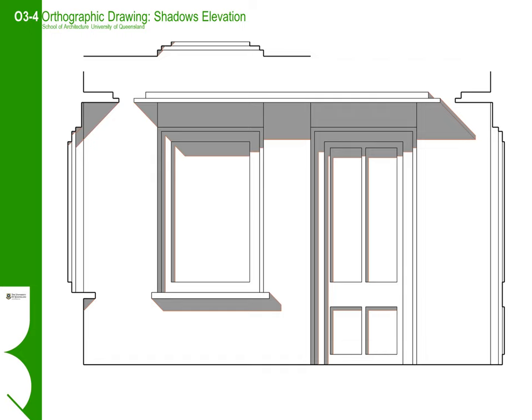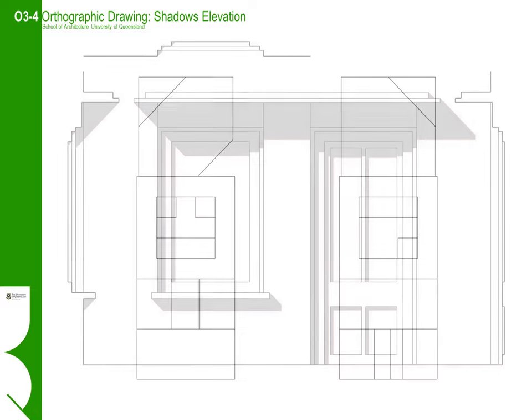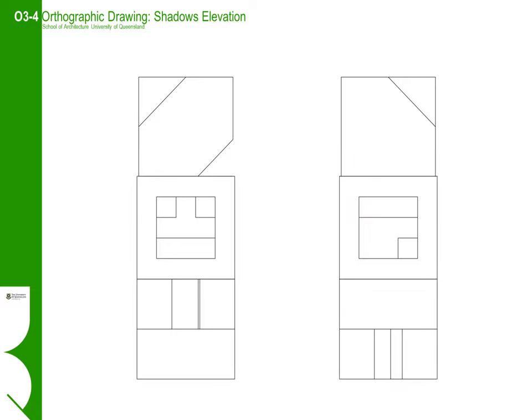Through the principles of orthographic projection, one is able to construct the shadow on the facade by mapping the intersection of the shadow angles projected from the plan and the section. Returning to our elevation view of our cube stack,